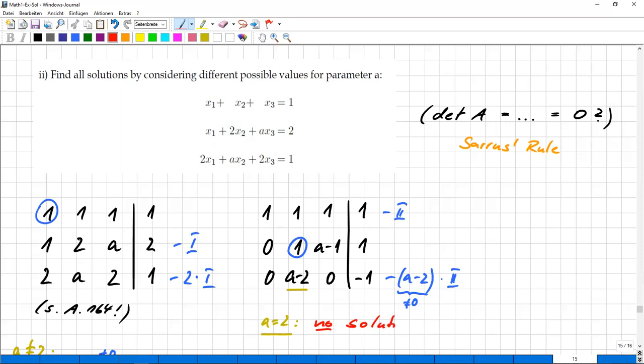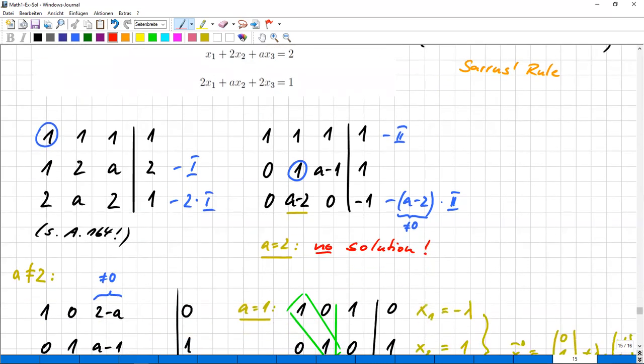And then it's done. So that means the first special case has already been done. And now it's important. Before I proceed, I have to declare that from now on, A must be unequal to two.